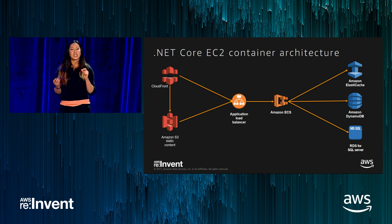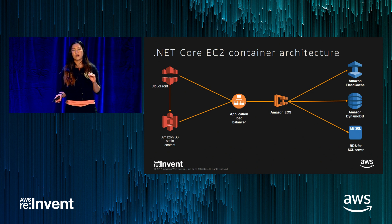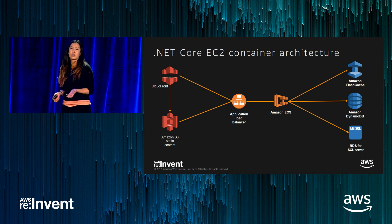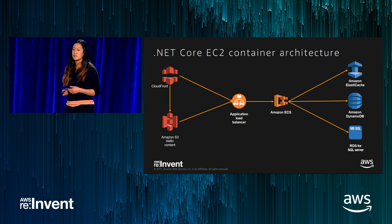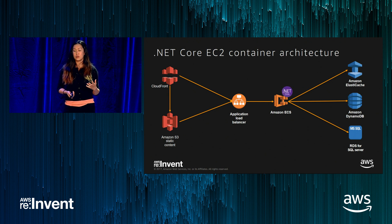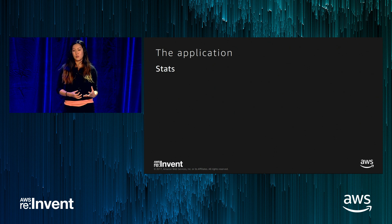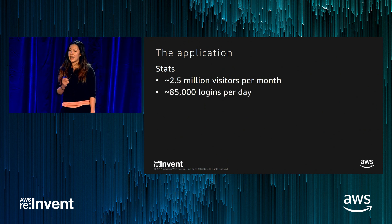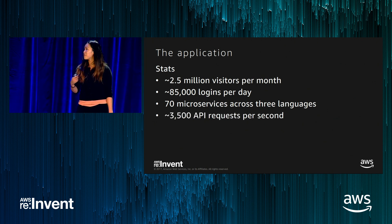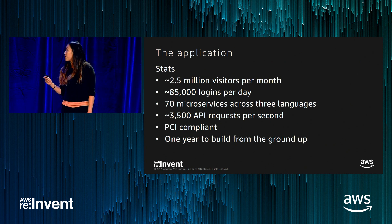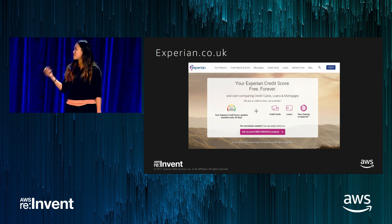Within ECS, there is a task parameter — a JSON file specifying what parameters your .NET application needs to run, and the .NET Core Docker image for the EC2 container instances. With all these managed services, it will be easier to deploy your .NET Core microservice architecture. To see this all come together: an application with 2.5 million visitors per month, 85,000 logins per day, 70 microservices written across three different languages, about 3,500 API requests per second, PCI compliant — built in about one year. I'll now pass over to Danny from Experian.